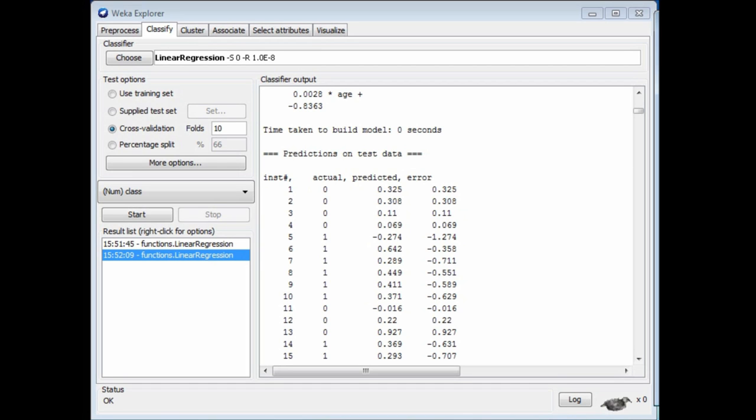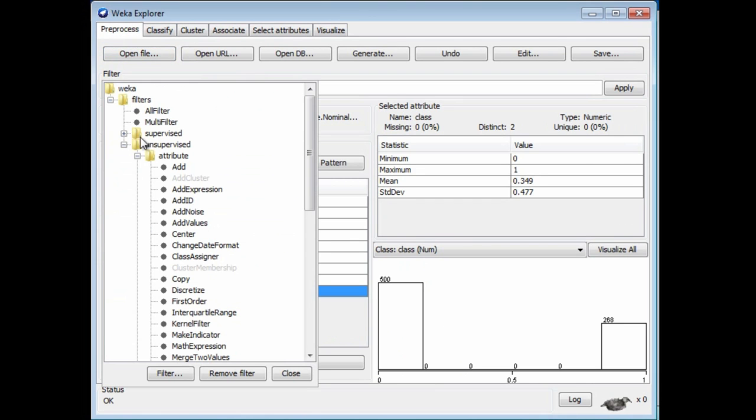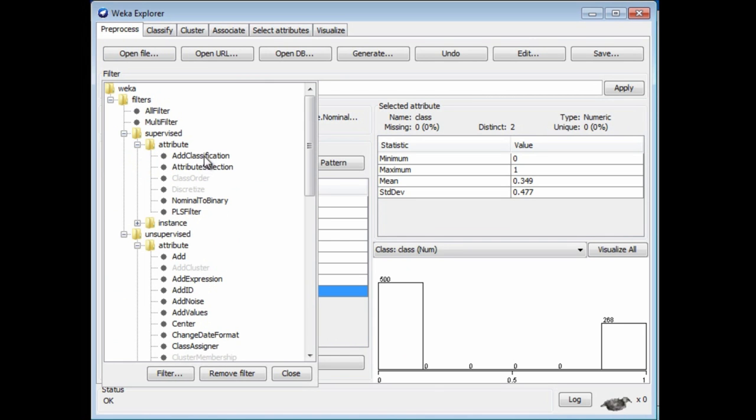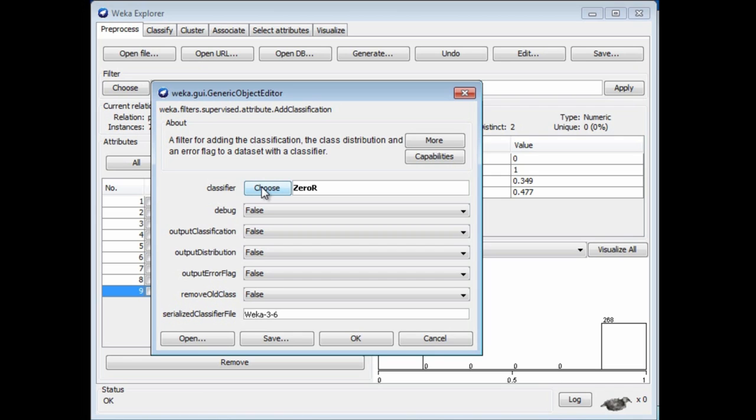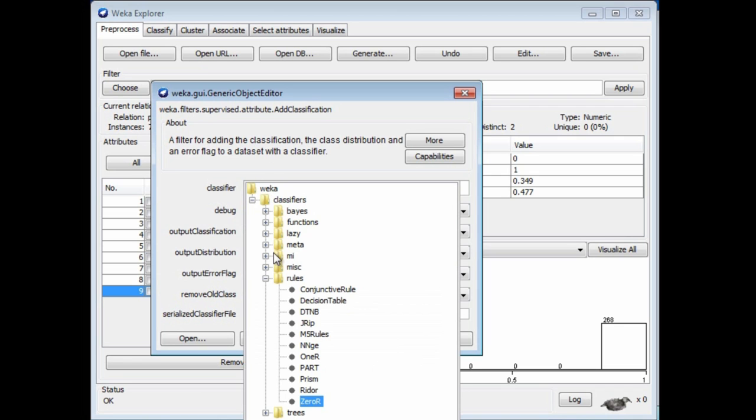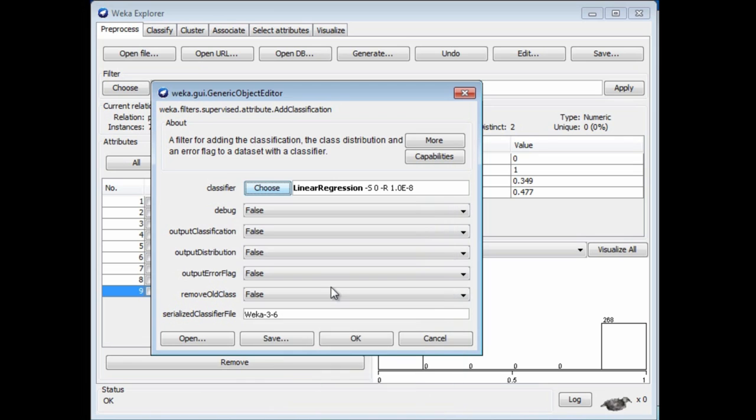Here it is in detail. We're going to use a supervised attribute filter. This is actually pretty cool, I think. It's a supervised filter. It's an attribute filter. We're going to add a new attribute called classification. We're going to choose a classifier for that. We're going to choose linear regression. For that classifier, we need to set output classification.